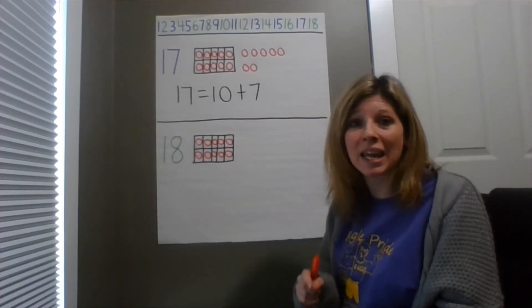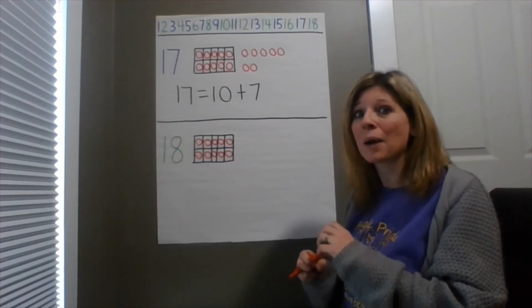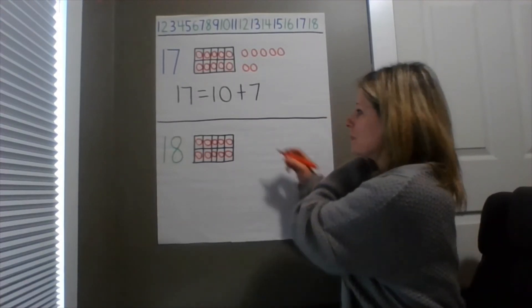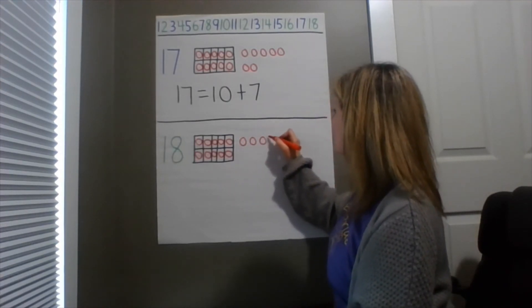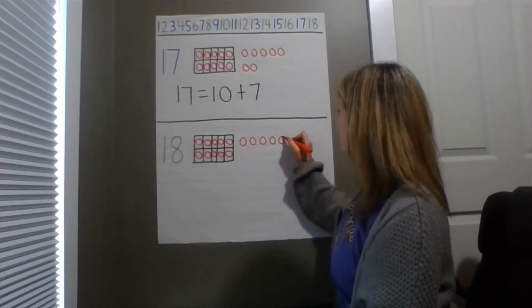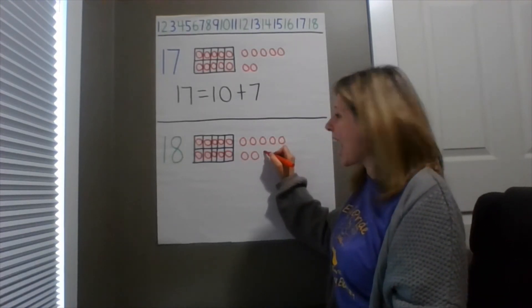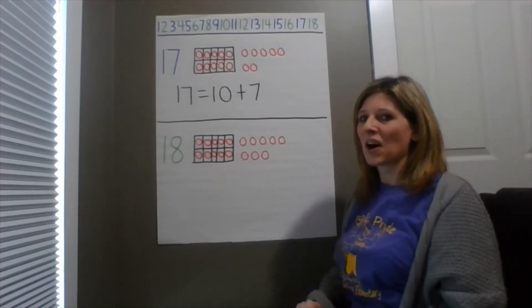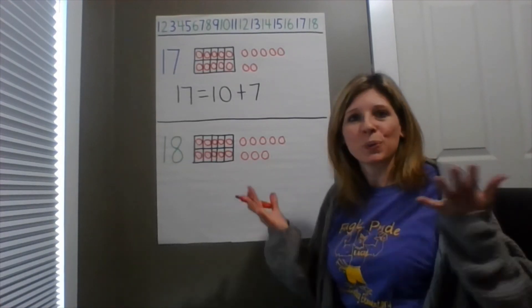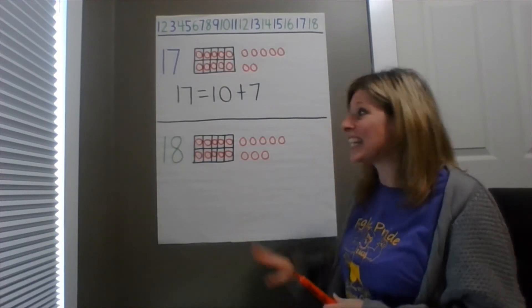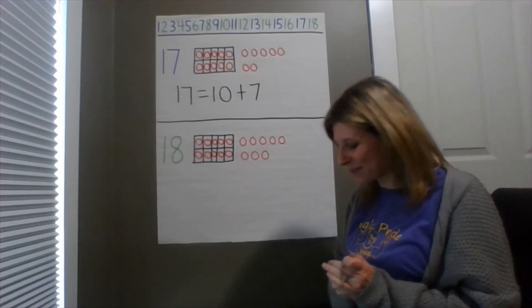So now I have to make 8 counters. You make sure that you have 8 objects right next to your 10 frame. I'm gonna count 8. Please count 8 with me. 1, 2, 3, 4, 5, 6, 7, 8. Alright. So now I have a group of 10 and 8 more. So what is 18? 18 is a group of 10 and 8 more.